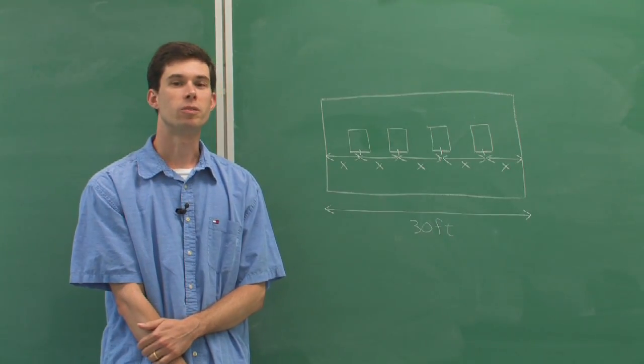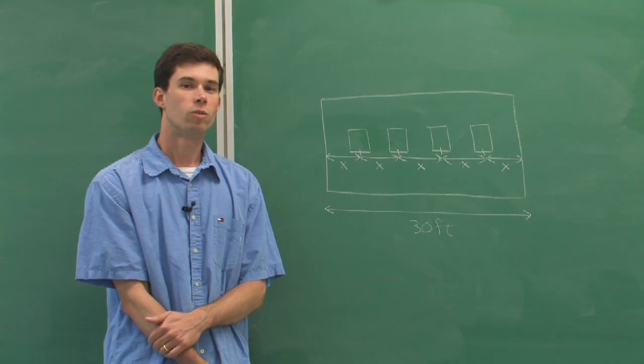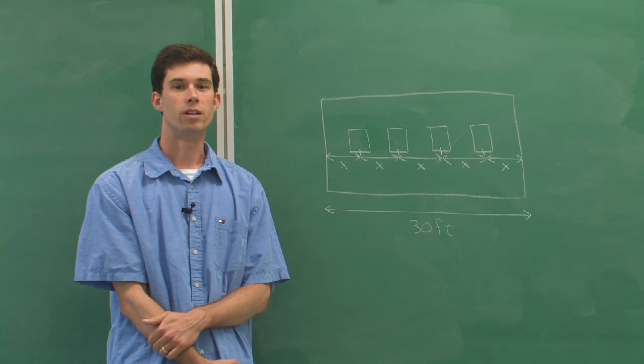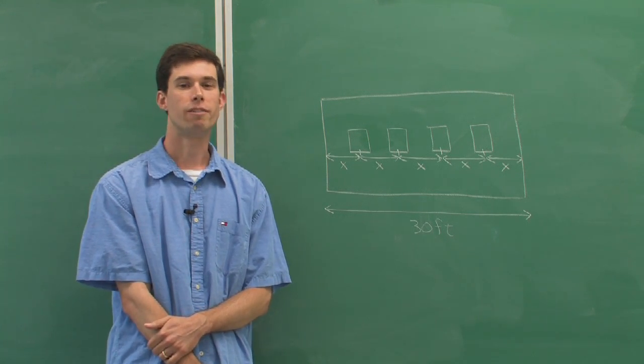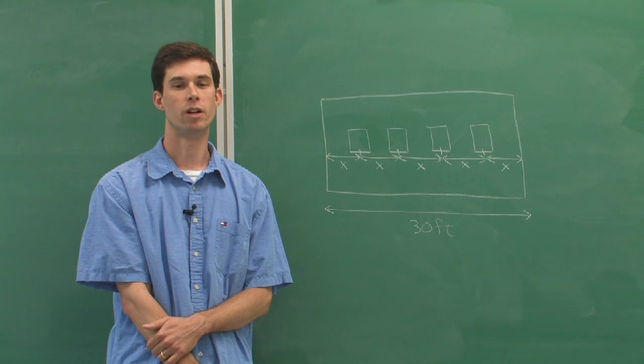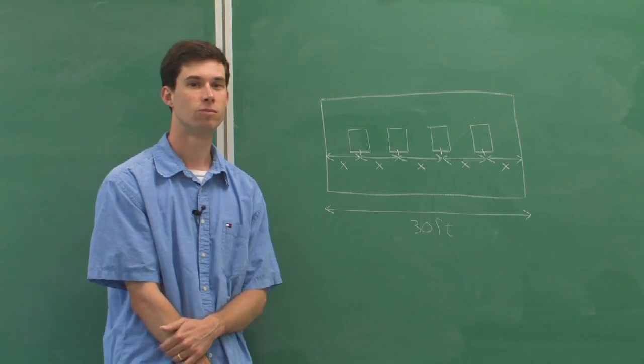Well, in order to equally space the windows, we simply need to take the length of the wall and divide it by one more than the number of windows that we have. So that would go like this.